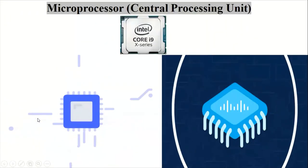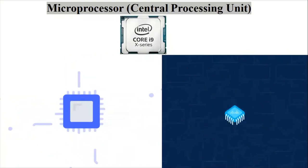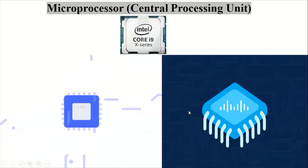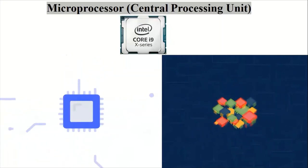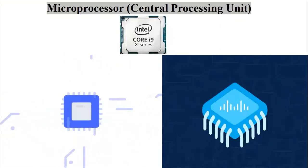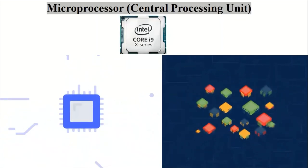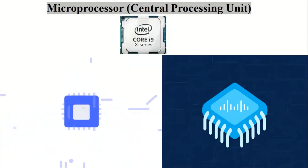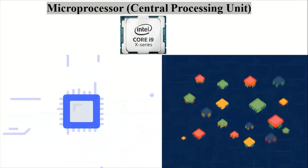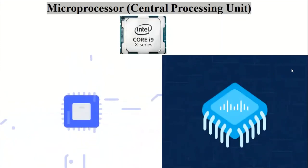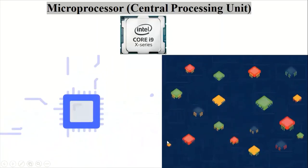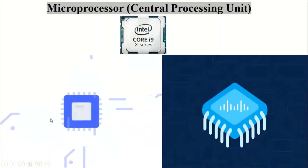We can see the microprocessor function in this animated picture. The microprocessor chip contains very large scale integration, or VLSI. VLSI means many electronic components in one place — millions of transistors and capacitors organized on a small square-inch silicon chip, as we can see. It performs different processing tasks.